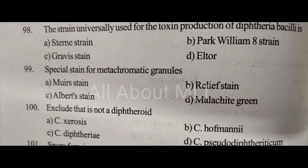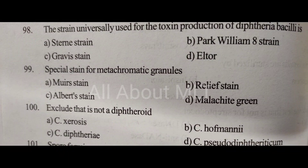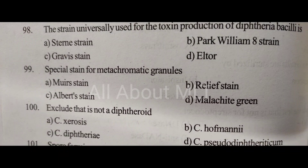Special stain for metachromatic granules. Option A: Muir stain. Option B: Relief stain. Option C: Albert stain. Option D: Malachite green. Answer is Option C: Albert stain.